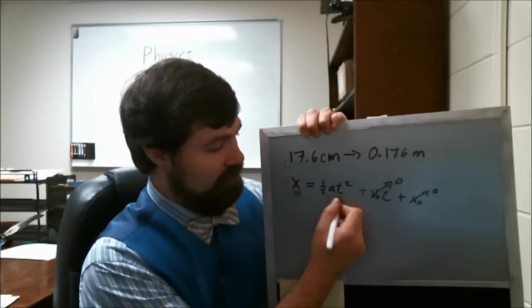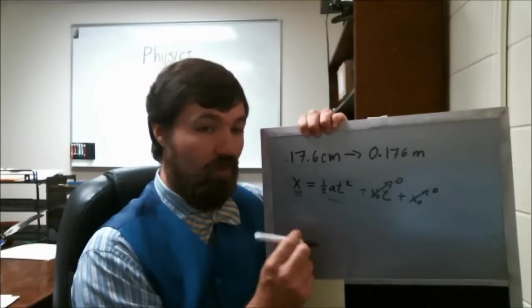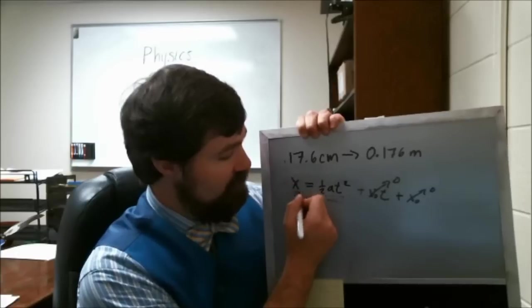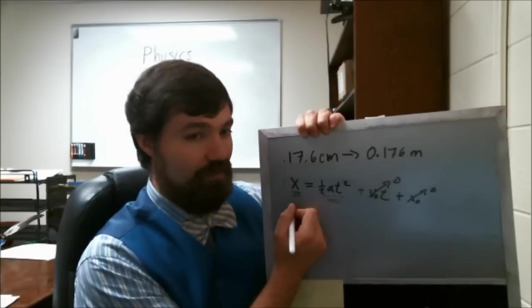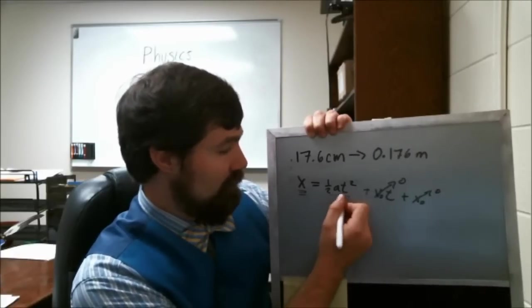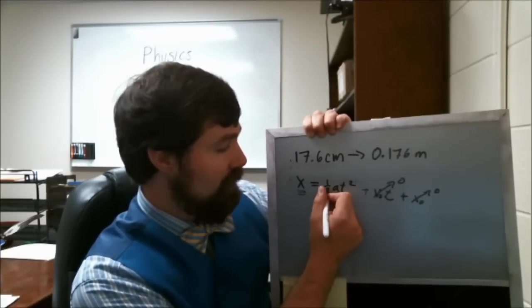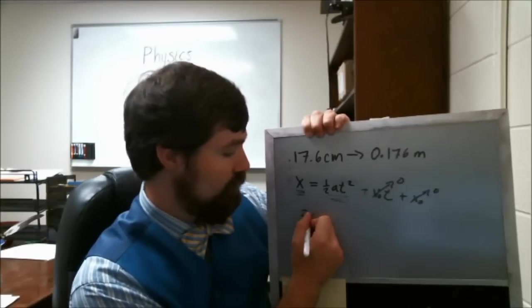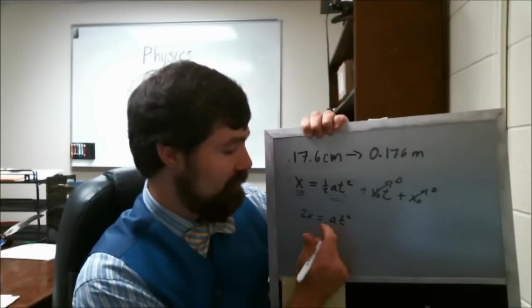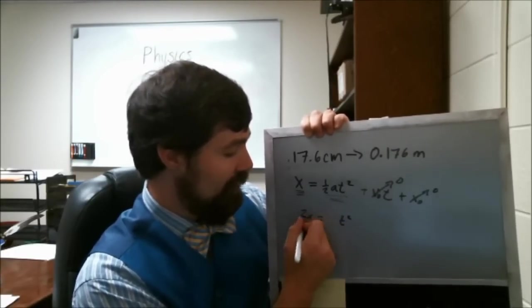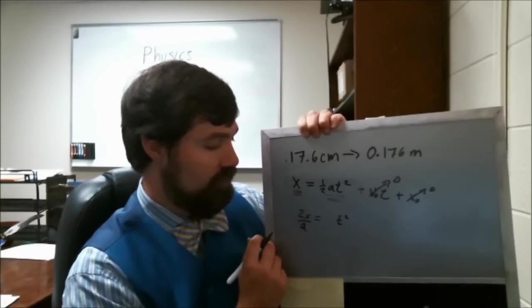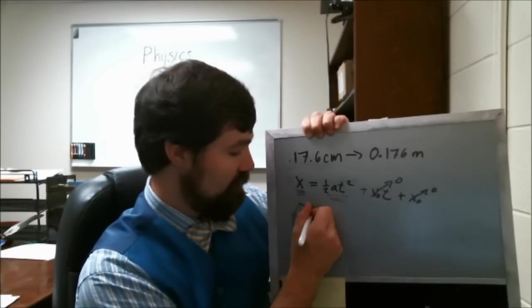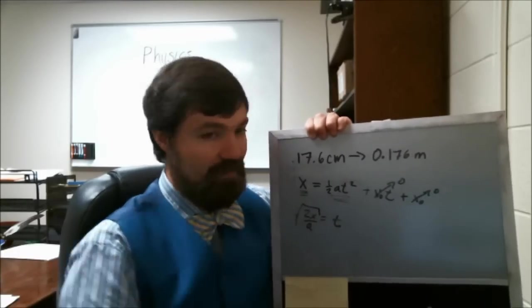We dropped it from rest so this guy is zero. So we're left with just the acceleration and the position. We're wanting to know how much time it took to fall, so we've got to solve this equation here for time. So multiply both sides by 2. So that's 2x equals a t squared. Divide both sides by a. So 2x over a is equal to t squared. And now take a square root of both sides and you've got the time.